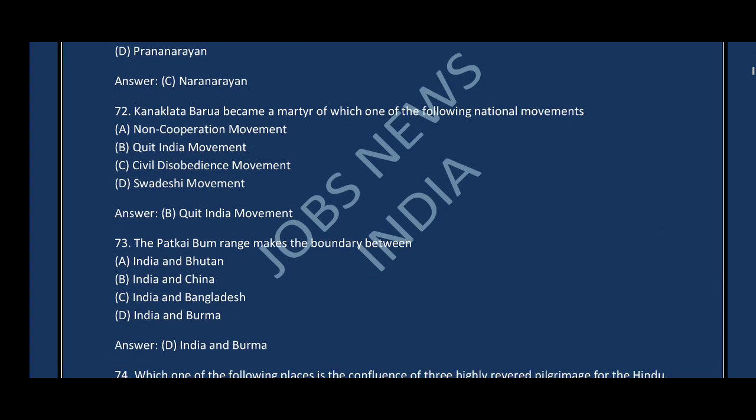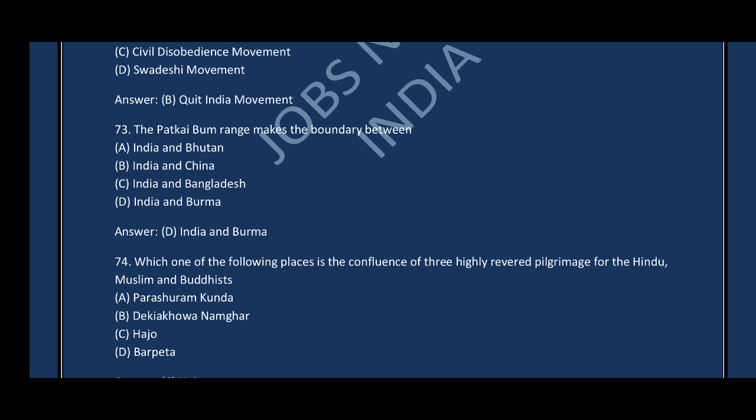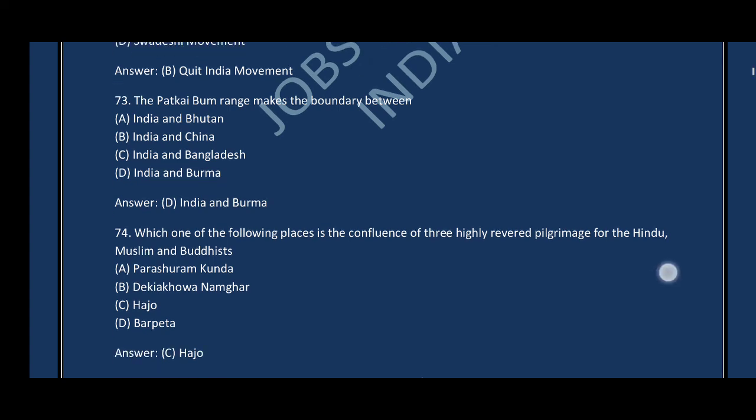Question number seventy-three: The Patkai Bum range makes the boundary between — the correct answer is option D, India and Burma. Question number seventy-four: Which of the following places is the confluence of three highly revered pilgrimage sites for Hindus, Muslims, and Buddhists? The correct answer is option C — Hajo, Kamrup district.